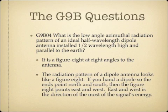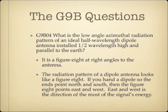What is the low angle azimuthal radiation pattern of an ideal half wavelength dipole antenna installed one half wavelength high and parallel to the earth? The answer is it is a figure eight at right angles to the antenna. If you hang a dipole antenna north to south, the radiation pattern points east and west — the strongest signal on a north-south dipole goes east and west. So it's a figure eight at right angles to the antenna.